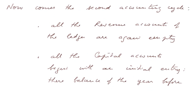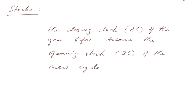Now comes the second accounting cycle. All the revenue accounts of the ledger are again empty — sales and charges. But all the capital accounts begin with an initial entry: their balance of the year before. So they are not empty at the beginning of the second cycle. Let's take a look at the stocks. The closing stock BS of the year before will become the opening stock IS of the new cycle. In other words, the closing stock BS of the year before will be in the top part of the income statement of the second cycle.